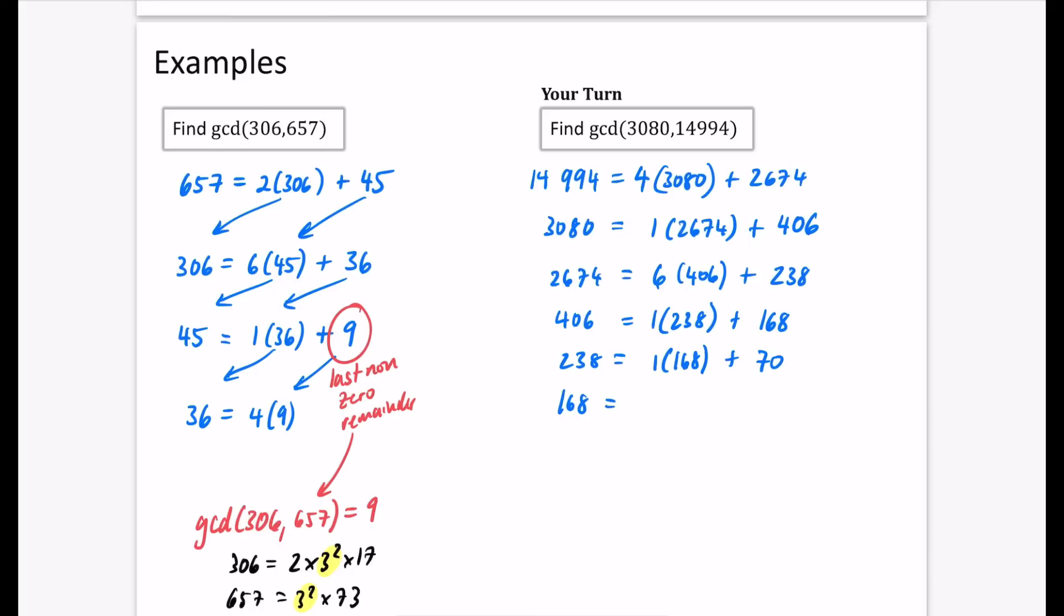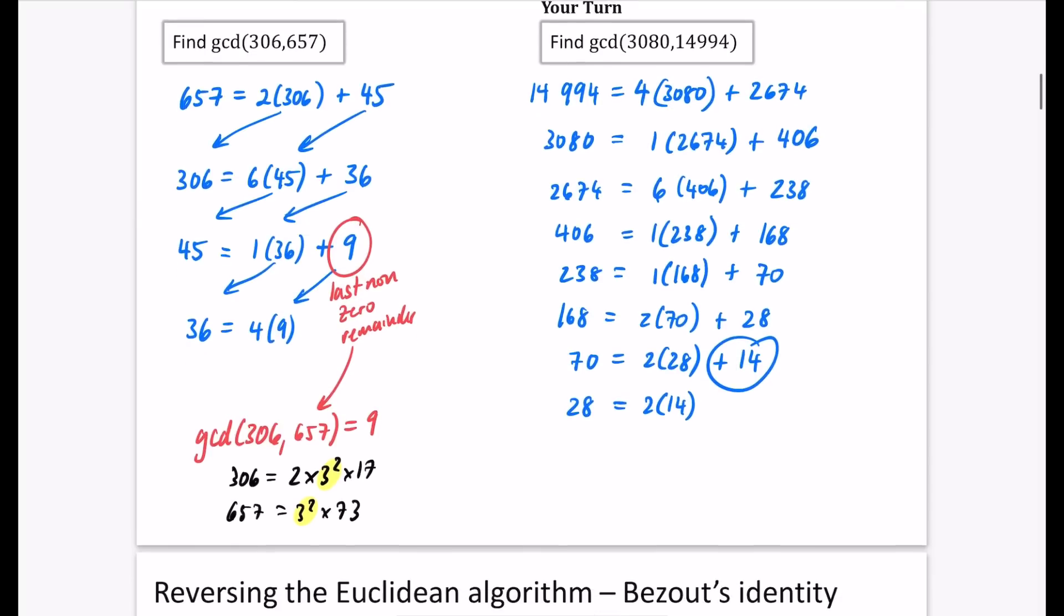So 238. Well, that's going to be clearly one lot of 168. So I'll do 238, take away 168. The remainder is 70. So 168. That's going to be two lots of 70, which is 140. I don't need the calculator for this because there's going to be an extra 28. And then I'm going to say that 70 is equal to two lots of 28. I'm going freestyle now because two lots of 28 is 56. And that gives us a remainder of 14. And then we get that 28 is just equal to two lots of 14 plus zero, which means this is our GCD. So our GCD of 3080 and 14,994 is equal to 14.